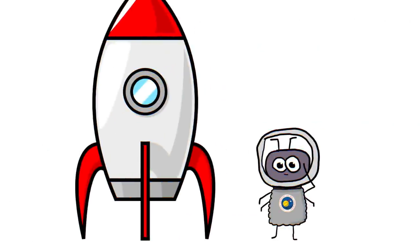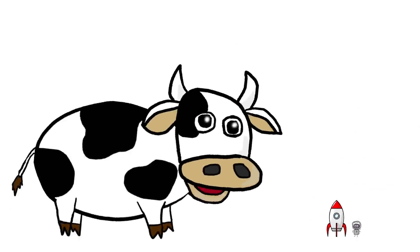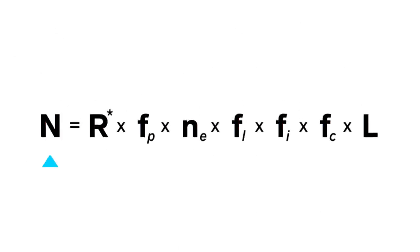But what if, by some strange miracle, Earth produced a brilliant mad scientist who built a spaceship and successfully contacted each and every sentient civilization in the galaxy? That would give us n. If the Drake equation were anything like other scientific equations, we should be able to reverse-engineer it and find the other variables, right?